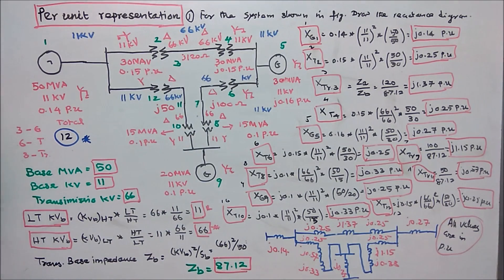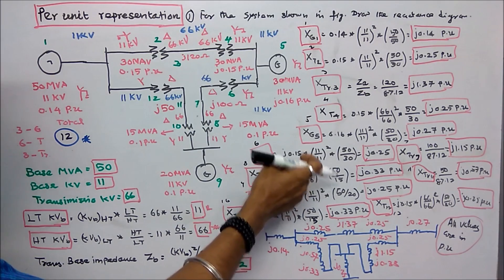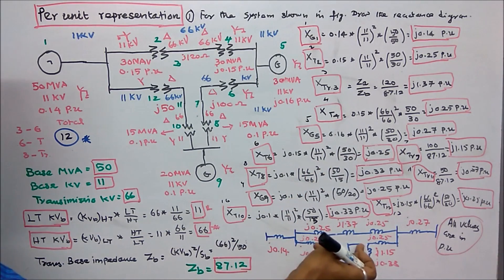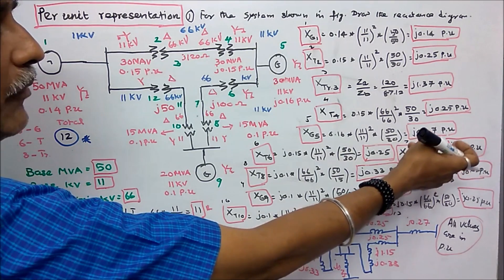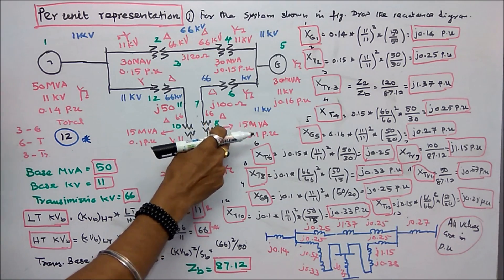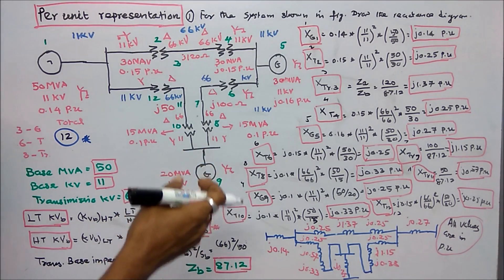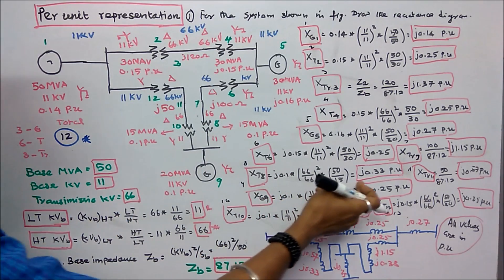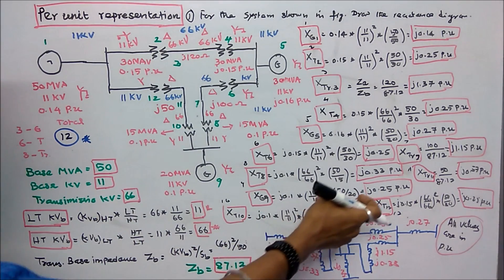For the next transformer: 0.15 × (11/11)² × (50/30) = J0.25 per unit. Transmission line 2: actual value is J100 ohms; 100 / 87.12 = J1.15 per unit. For the pair of transformers (components 9 and 11): 0.1 × (66/66)² × (50/15) = J0.33 per unit. For Generator 2: 0.1 × (11/11)² × (50/20) = J0.25 per unit.